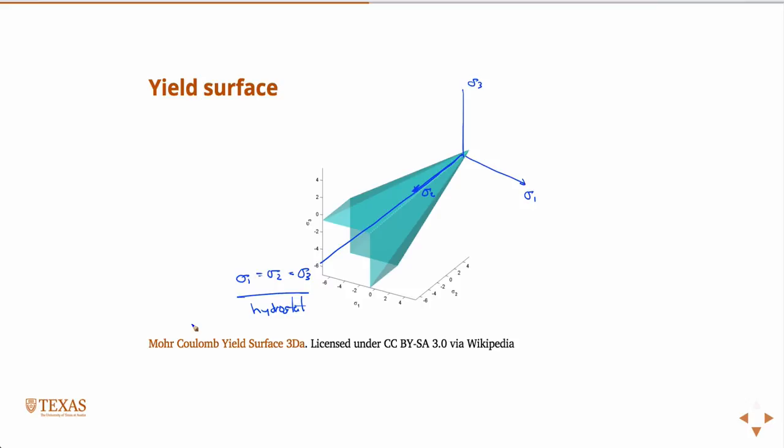Of course, that's not true. If I squeeze a rock hard enough, I will collapse its pores, and when I let it go, it's not going to return to its original volume because I've squeezed out some of the volume permanently. So there's going to be permanent plastic deformation due to pressure. And so later we'll see that we can add a cap on the end of this model.